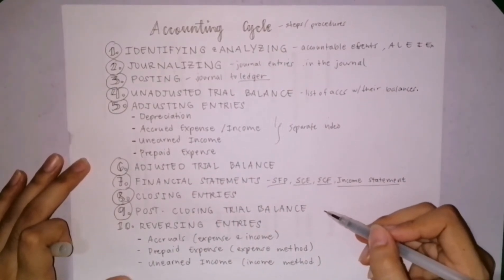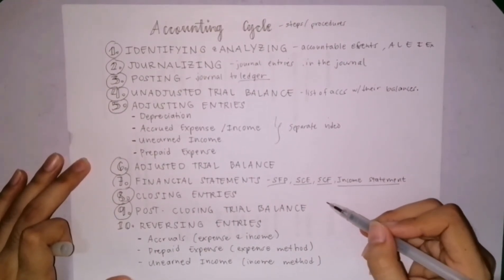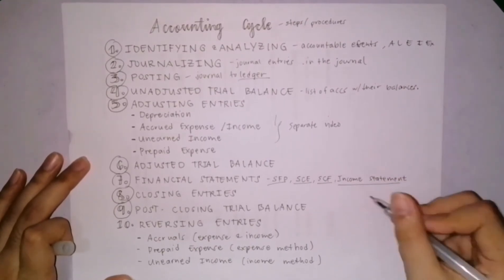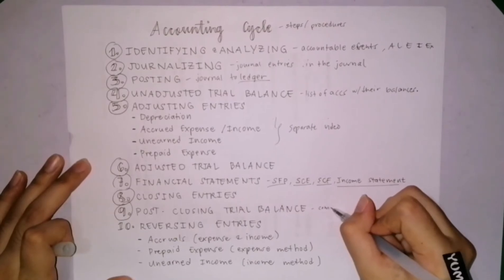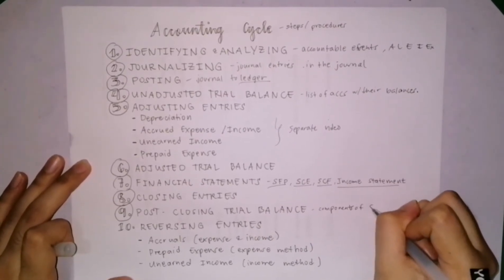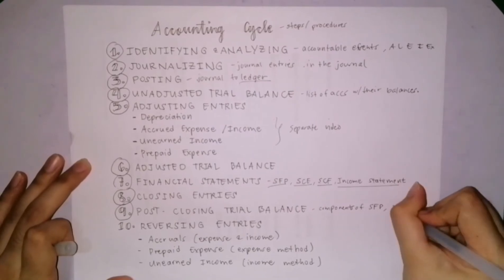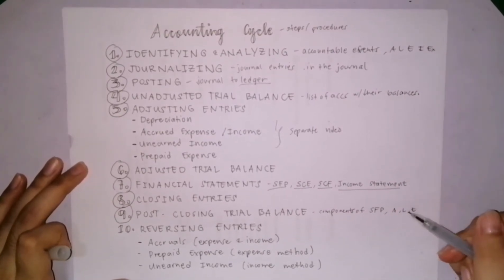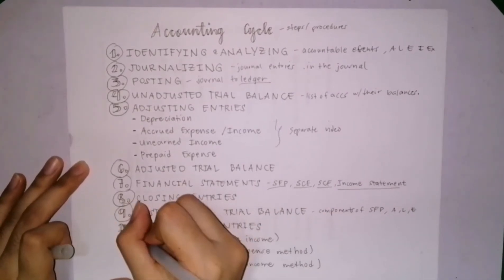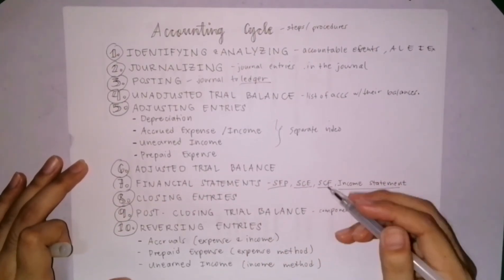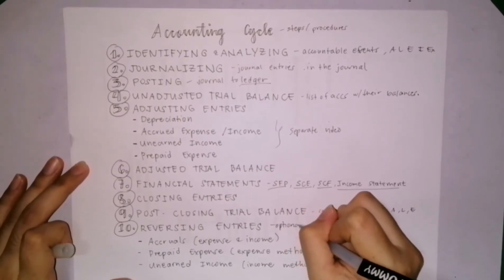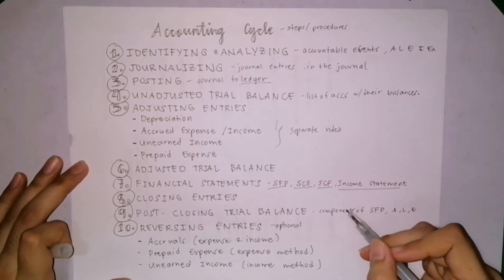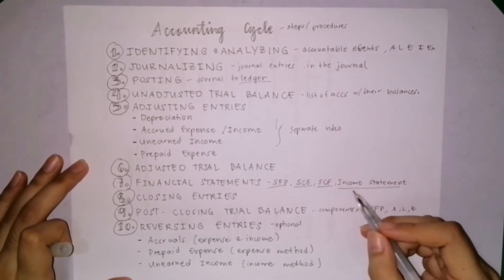Next is the post-closing trial balance. In the post-closing trial balance, only real accounts remain — asset, liability, and equity accounts. These are the components of the statement of financial position. Next is reversing entries. It is done to reverse certain adjusting entries at the beginning of the next accounting period, meaning on January 1. It is optional — it's up to the company whether to prepare reversing entries.